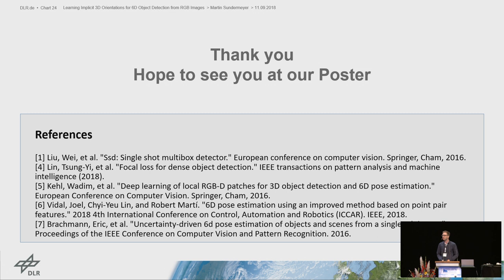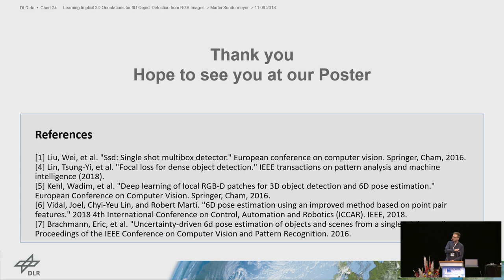Another question asked about how object symmetries affect pose estimation and ambiguities. The presenter explained that in supervised learning, different labels map to the same object view, and learning the mean may not be correct. In their approach, at test time they simply choose the nearest neighbor, which is one of the ambiguous poses — since they cannot distinguish them. You could also cluster symmetric views together to retrieve all symmetric poses.